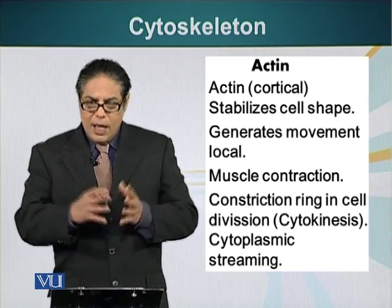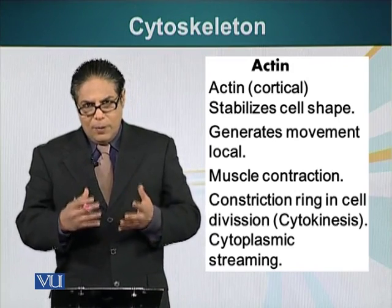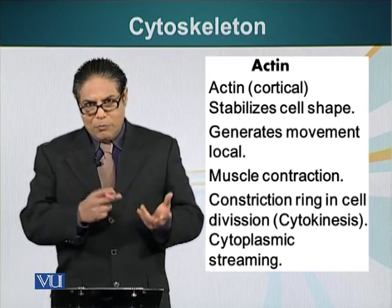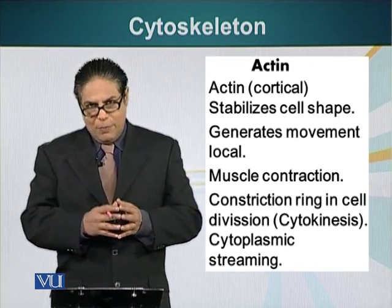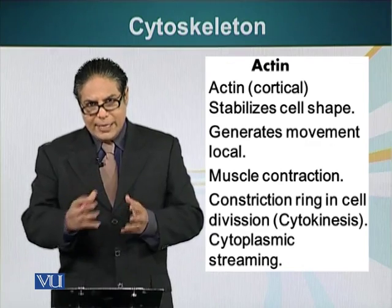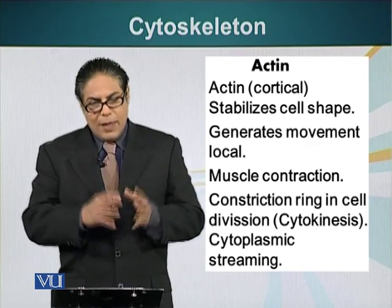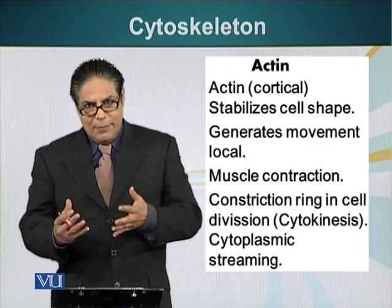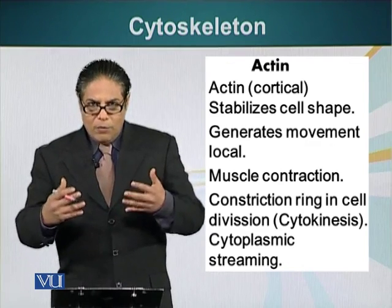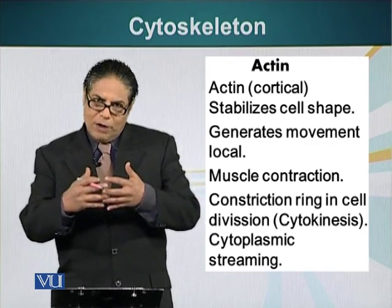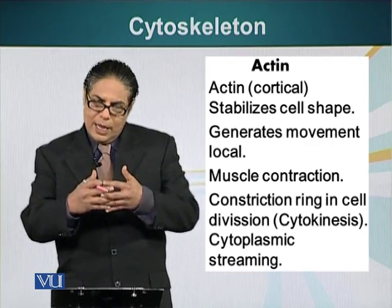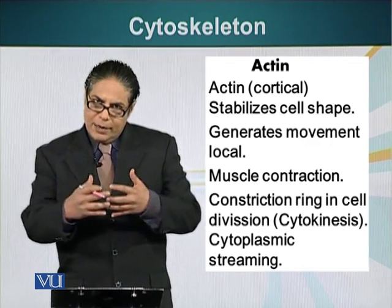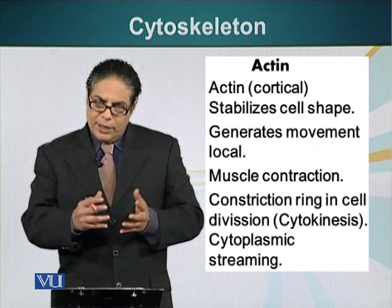Muscle contraction is another key function of actin. Muscle is made up of two different types of fibers — actin and myosin. Actin is the cytoskeletal element along which myosin fibers glide, resulting in muscular contraction.